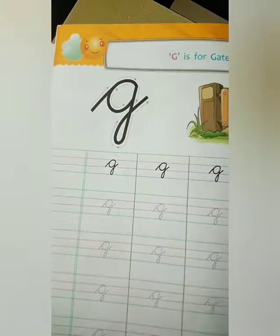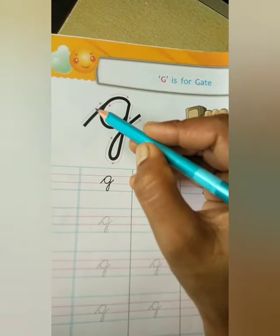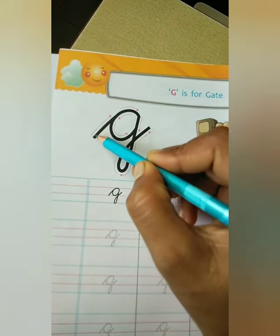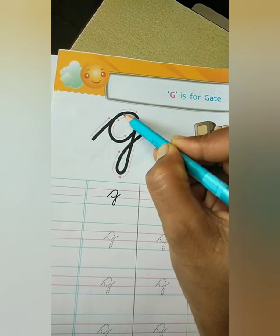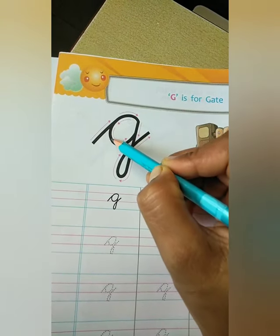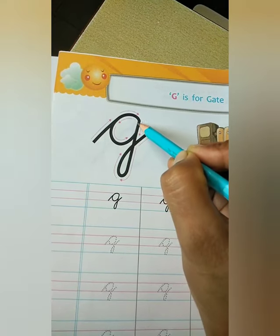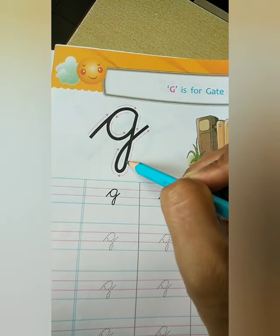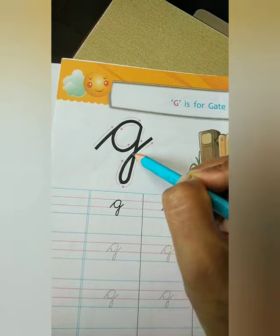Small cursive stroke G. Start from here, curve, then down side, curve, up, then down, curve and up.